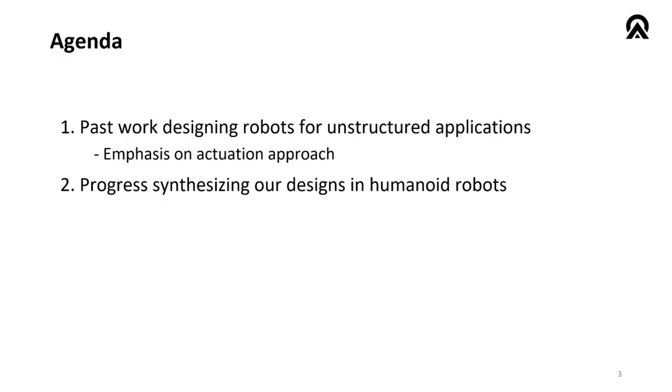So splitting the talk into two parts here. The first part is really going to focus on some of our historical work, building robots for unstructured applications. And some of these are not going to be legged applications, but I think the problems that we're solving still apply to this audience. These are roughly grouped based on actuation approach. And I'll be going over some of the rationale there. And the second part, I'll talk a little bit about our current state in humanoid robotics.